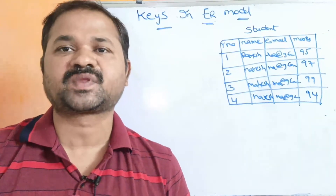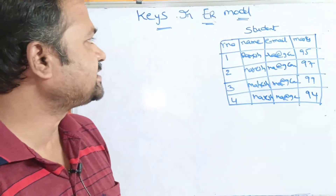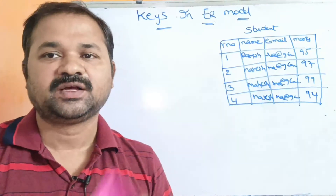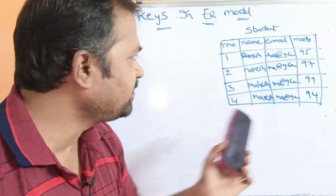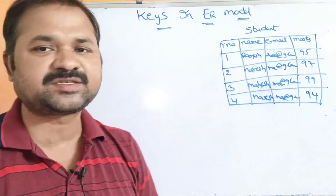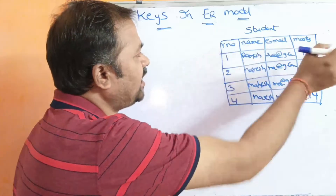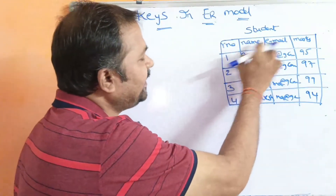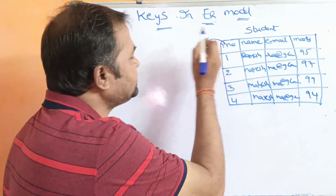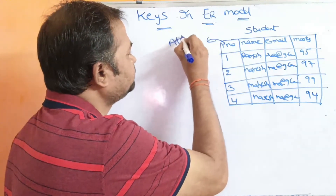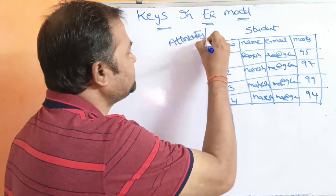In this video, we are going to discuss about keys in ER model, that is keys in DBMS. Let us take this table. The name of the table is student. The student table mainly contains four columns: roll number, name, email, and marks. These are called as attributes or fields.